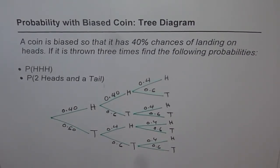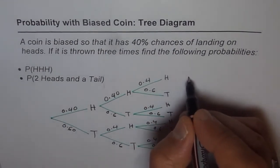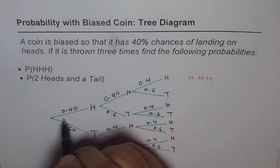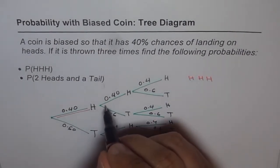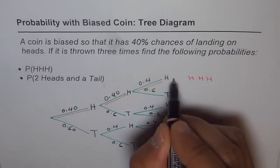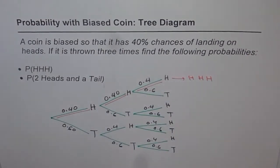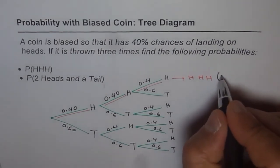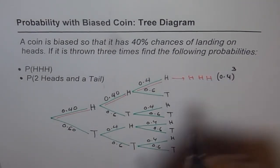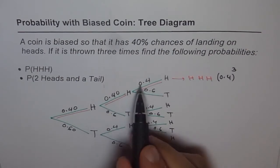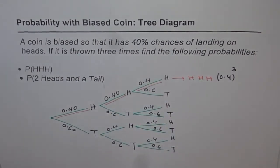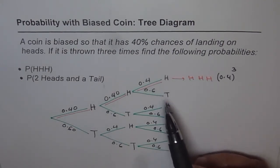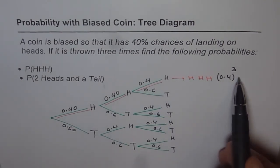Now we need to find the probability of getting 3 heads. You can get 3 heads only in one combination — following the head-head-head path. You multiply 0.4 × 0.4 × 0.4, which gives 0.4 cubed. That is your answer. Interestingly, if we toss the coin n times and ask for all heads, we get 0.4 to the power of n.